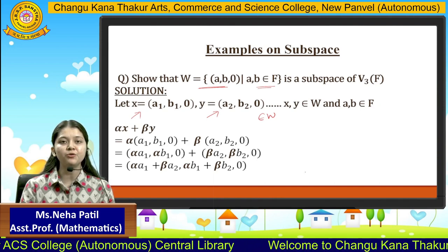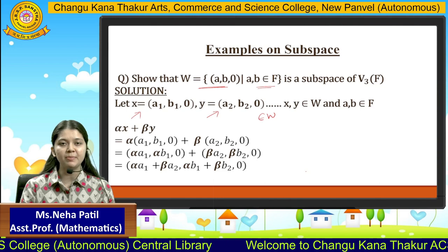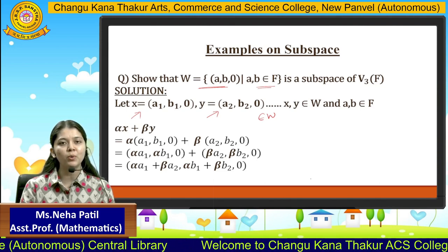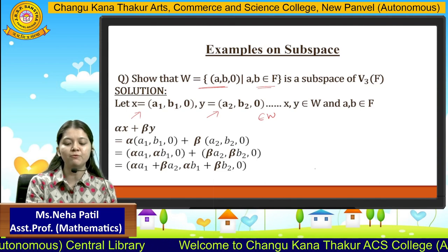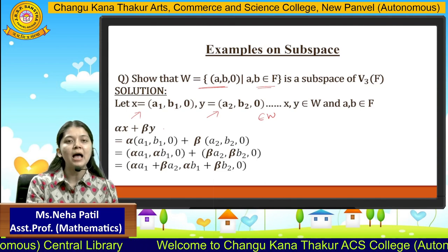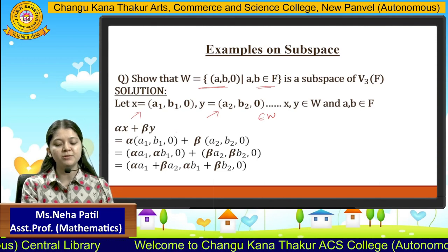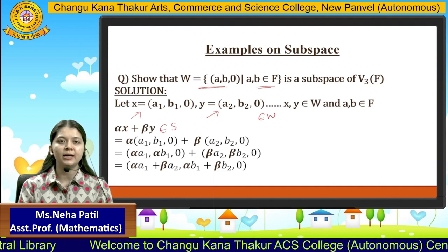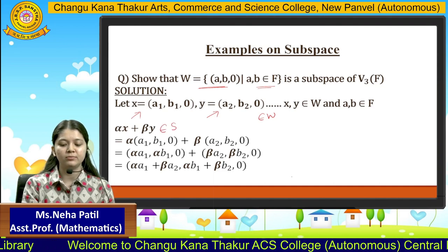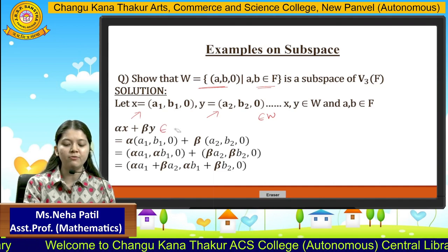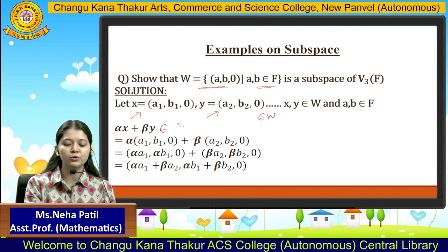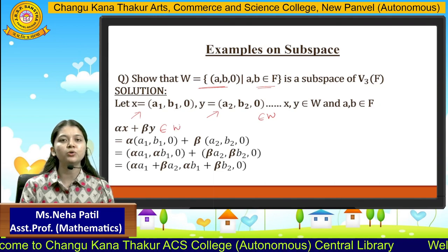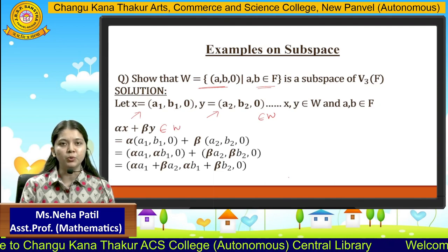Now, in order to satisfy the one step test to be a subspace, we have to show that alpha x plus beta y belongs to W.